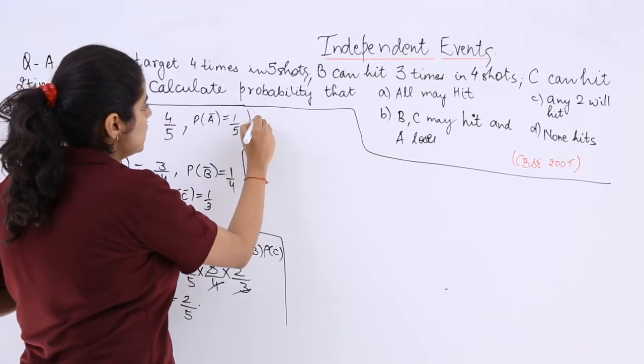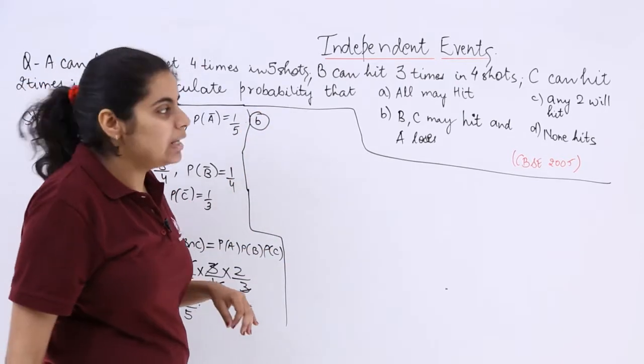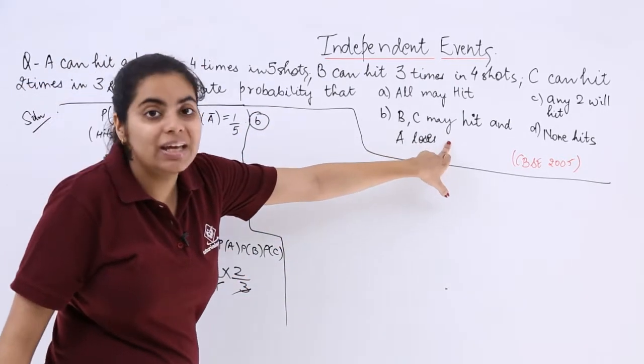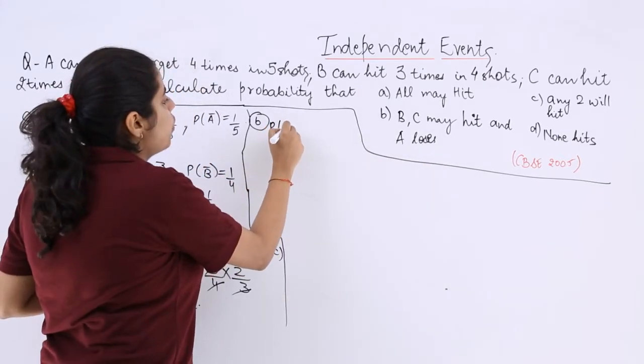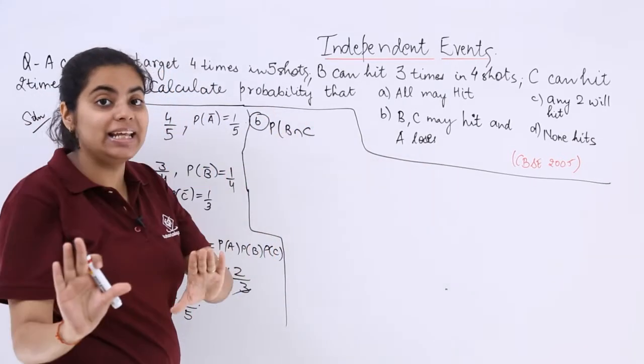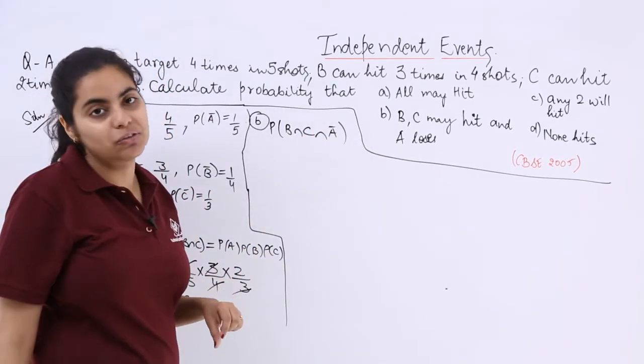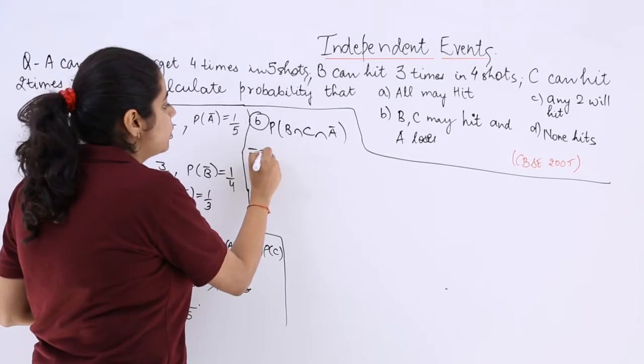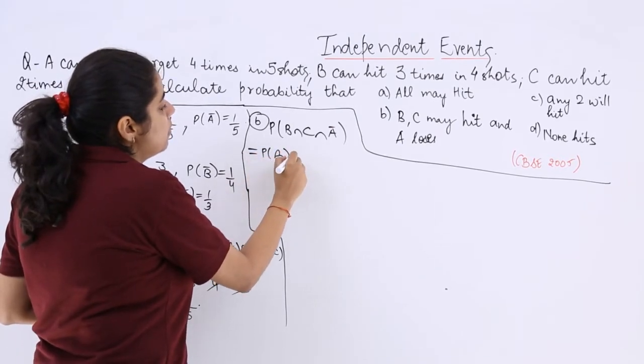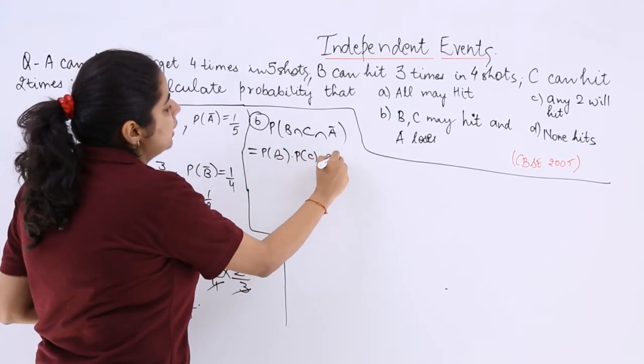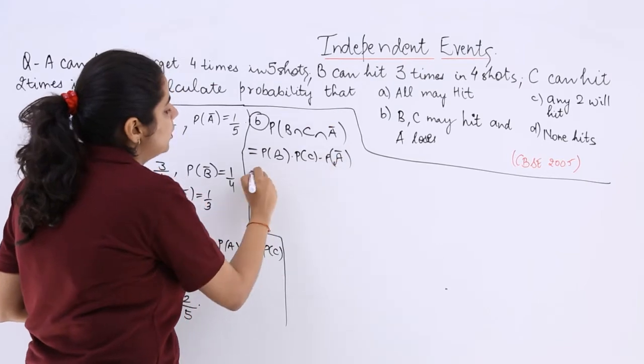Now the second part is B part and the B part is B and C may hit. So B and C are hitting but A loses. So A loses means the complement of A.